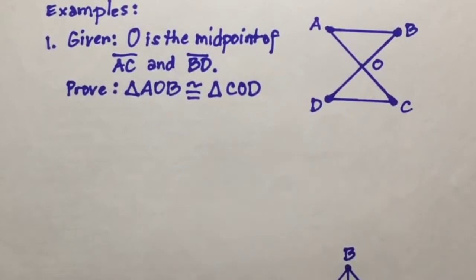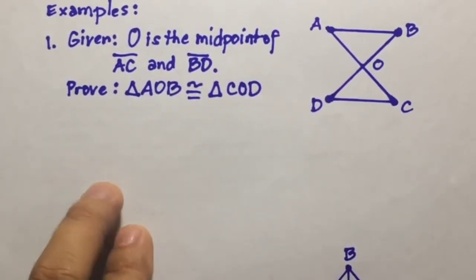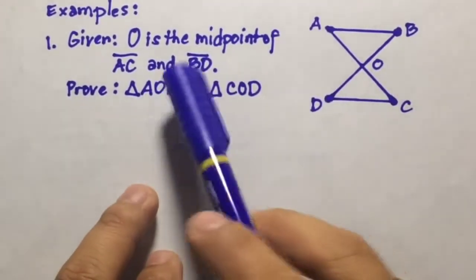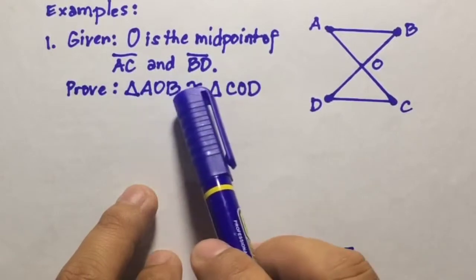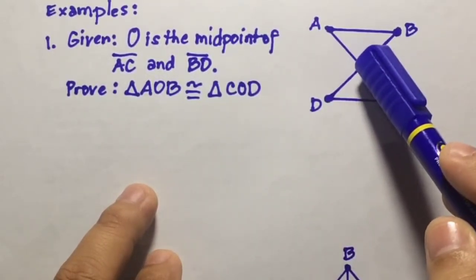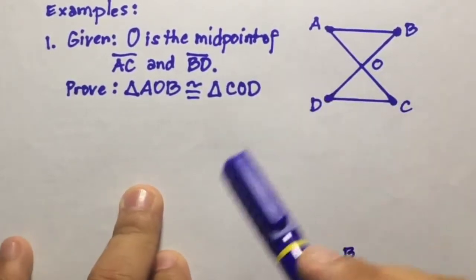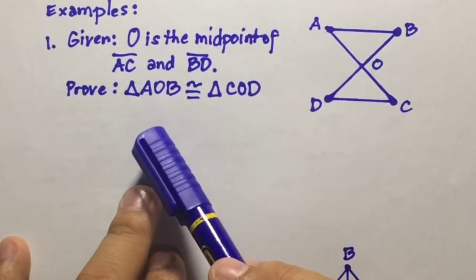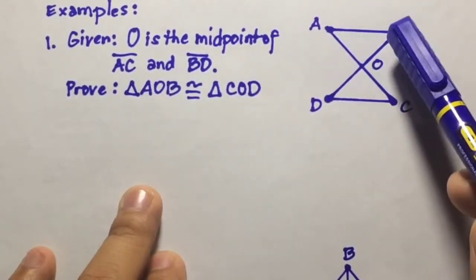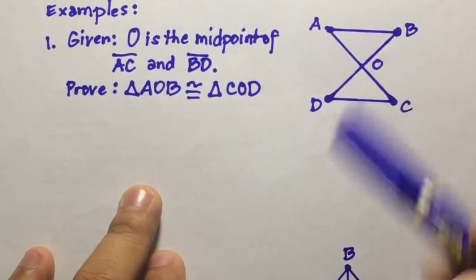Let's have examples of problems that can be solved using the SAS congruence postulate. Example number one: given that O is the midpoint of line segment AC and BD — so this is O here, the midpoint of the two line segments — we are going to prove that triangle AOB is congruent to triangle COD.